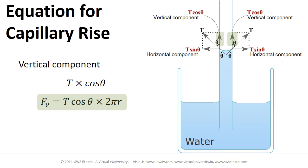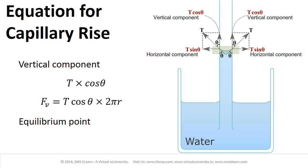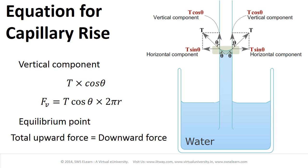Hence the total vertical force is given by F equal to T cosθ into 2πR. Due to this vertical upward force, the water rises in the capillary tube and stops when this vertical force is balanced by the gravitational force acting downward. This is the equilibrium point where the total upward force equals the downward force.